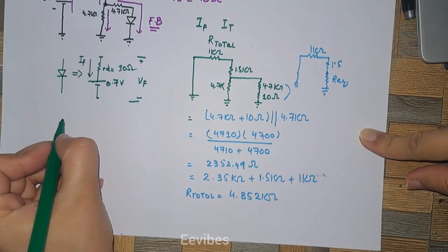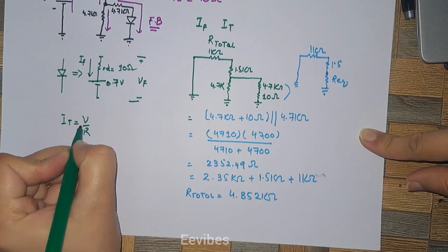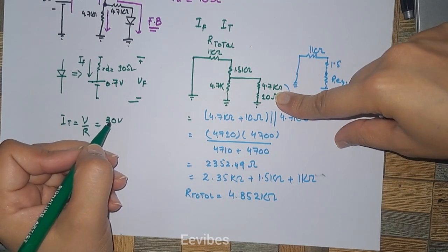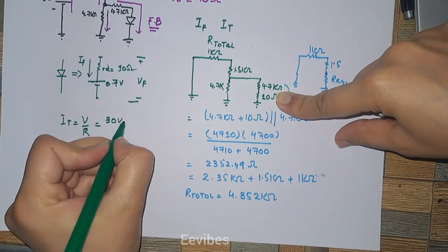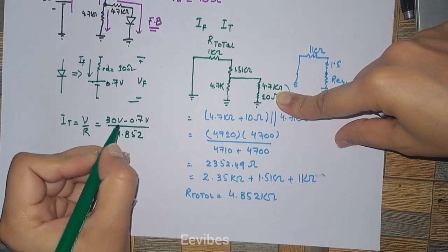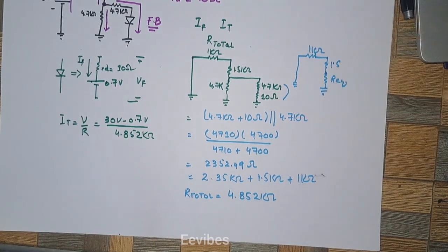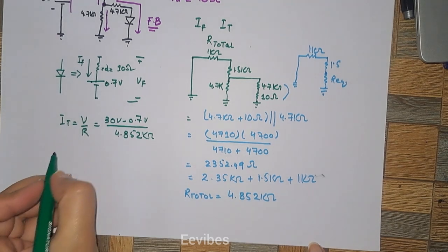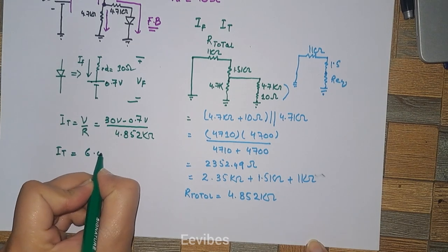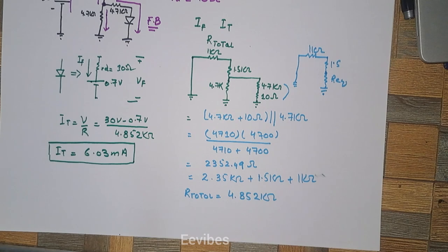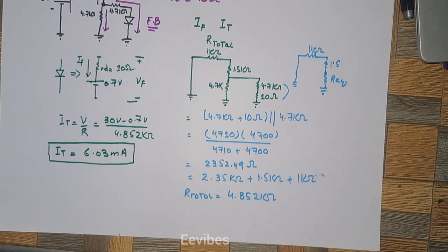I_total equals V over R. V is equal to 30 volts. Since we are considering the complete diode model, the barrier potential of 0.7 volts is subtracted, and then divided by the total resistance of 4.852 kΩ. So we compute (30 − 0.7) / 4852, and the total current comes out to be 6.03 milliamperes.